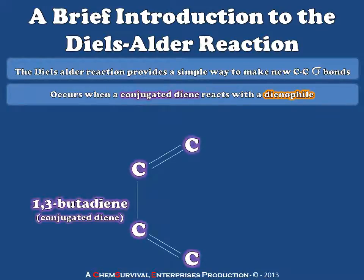A conjugated diene would be something like this, the simplest version being 1,3-butadiene. 1,3-butadiene has alternating pi bonds, so each carbon is sp2 hybridized and there are a total of four pi electrons within that system.